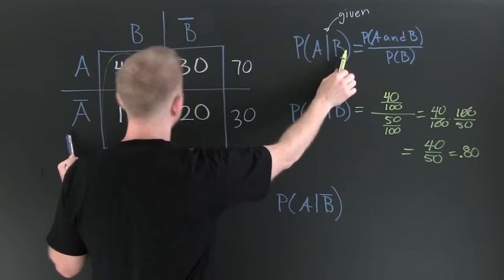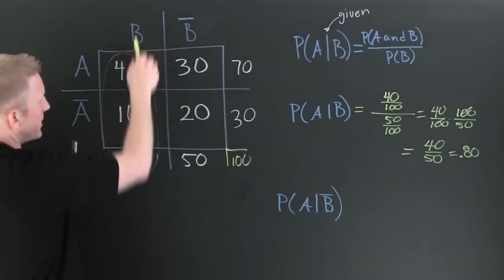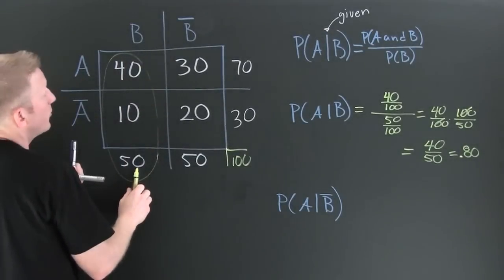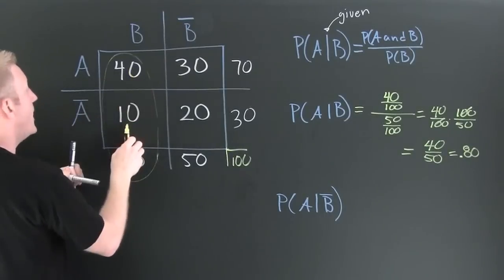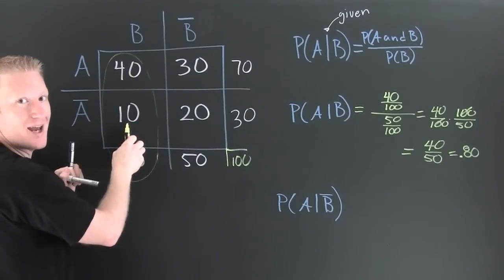Because B has already occurred, we know we're here. This is the probability of A given B. So if we restrict ourselves to A given B, we see that B has 50 elements. 40 of them are A and 10 of them are not A.